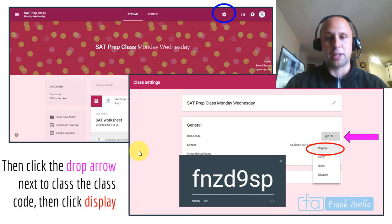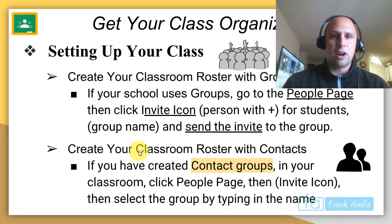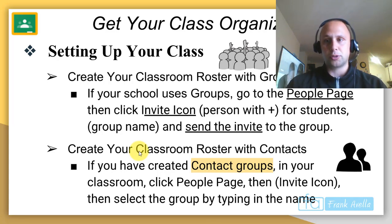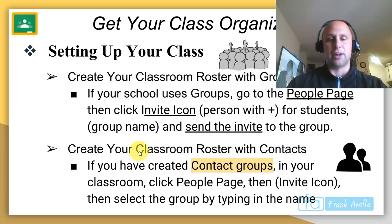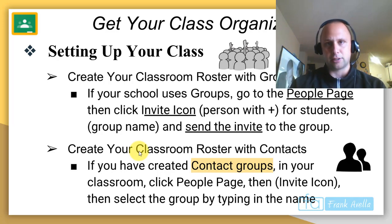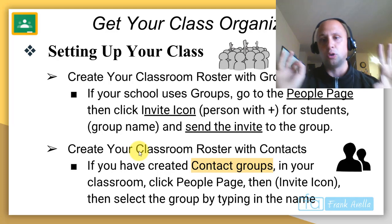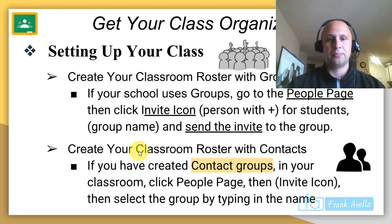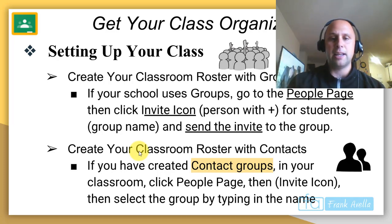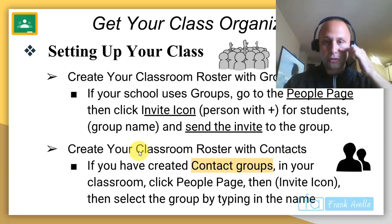Students should know how to join a classroom by now. You can create class rosters with Google Groups — if your school uses groups, go to the people page, click the invite icon for students, and send the invite. You can also create a classroom roster with contacts — remember there are two ways: with groups or with contacts.